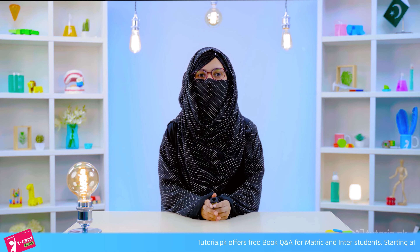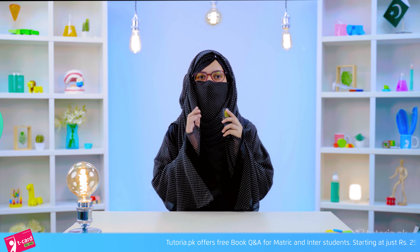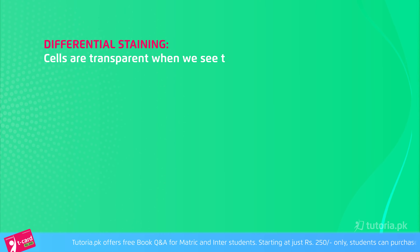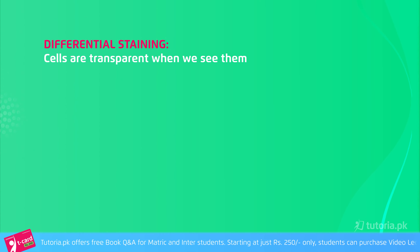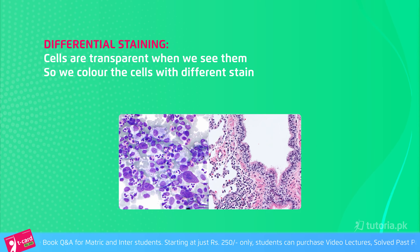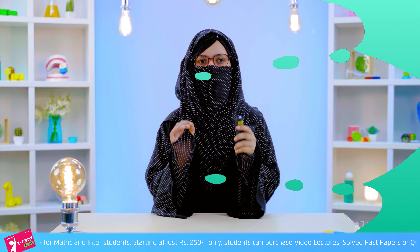Hello students, Assalamualaikum, this is Laiba Tariq, your biology instructor from tutoria.pk. If you see the cells in the microscope, they are transparent, meaning they don't have their own color.